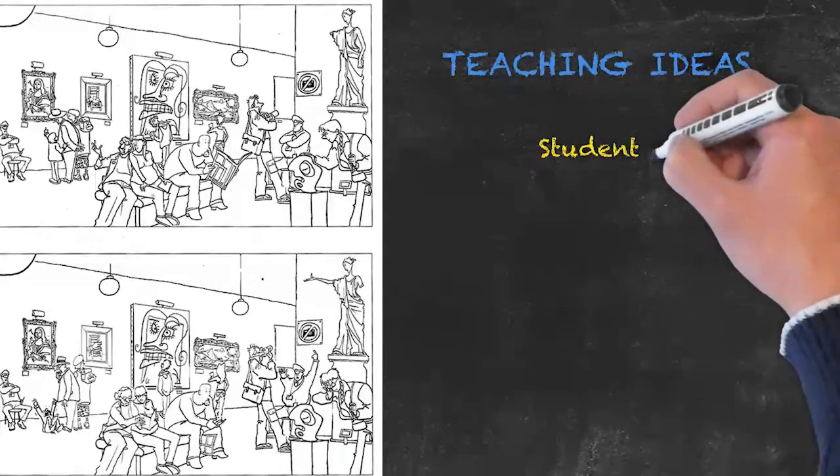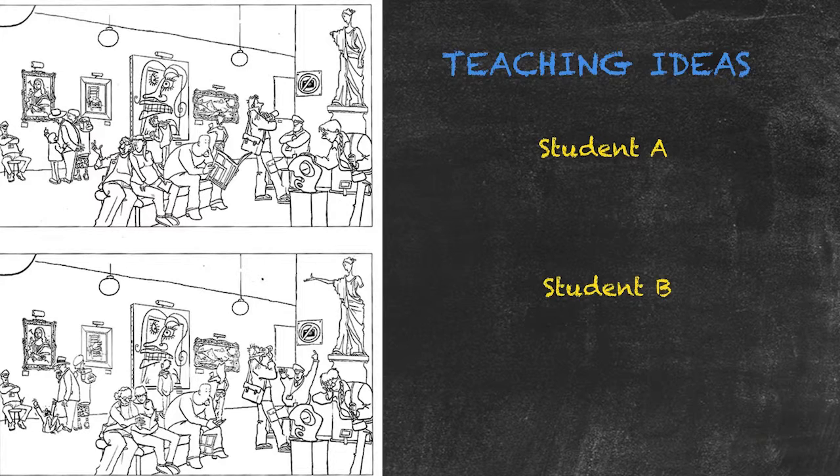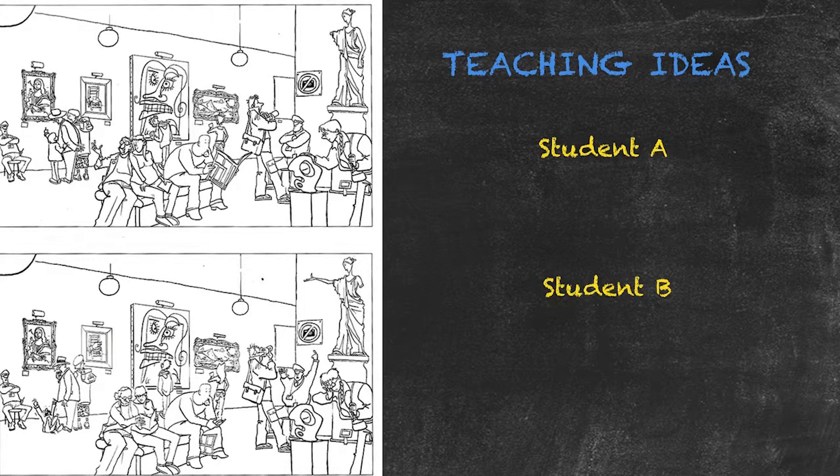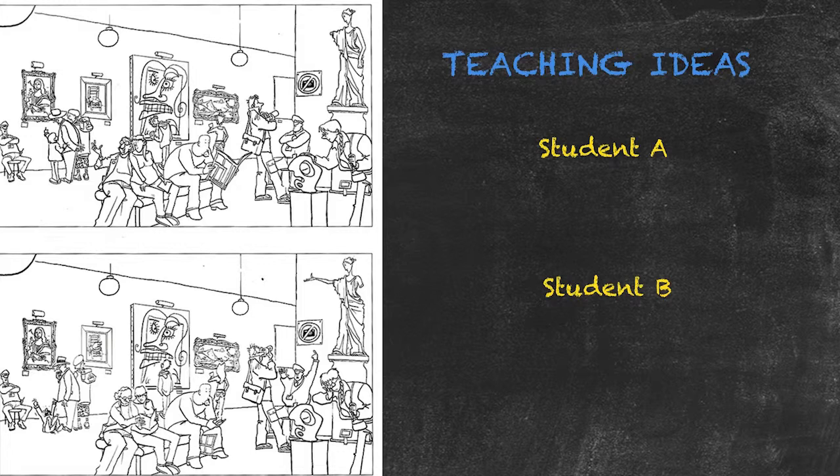The students will be paired up in student A and student B. The teacher will give the pairs a time limit in which to make statements about each one's picture, hopefully in the process identifying differences.